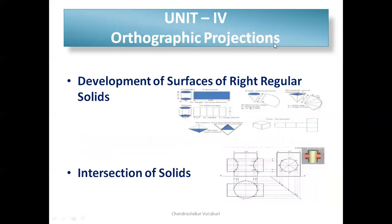Unit four is also under orthographic projection and has two categories: development of solid surfaces and intersections of solids. They may ask the development of a truncated solid, frustum, or direct prism, pyramid, or solid of revolution — you need to draw its lateral surface. For intersections, we have prism versus prism and cylinder versus cylinder. Question 7 covers surface development and question 8 covers intersection, each a direct 15-mark question.